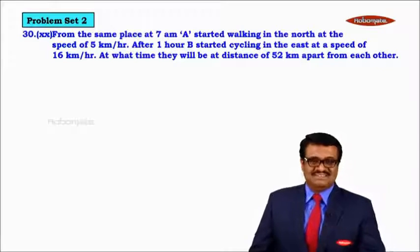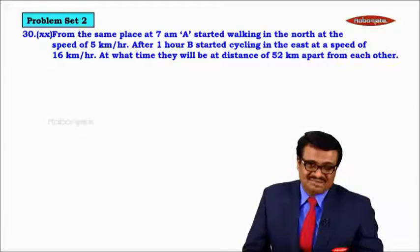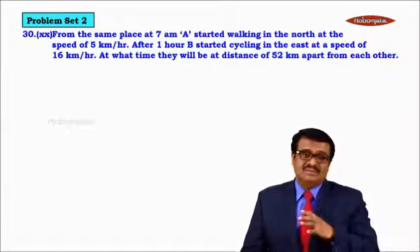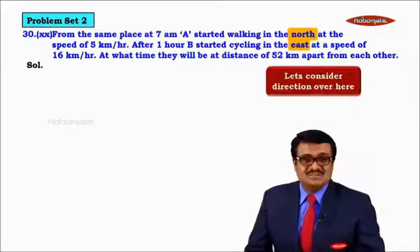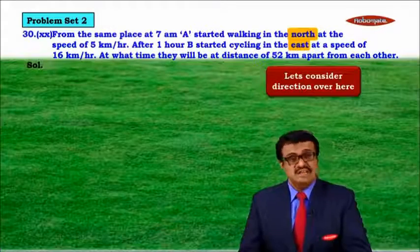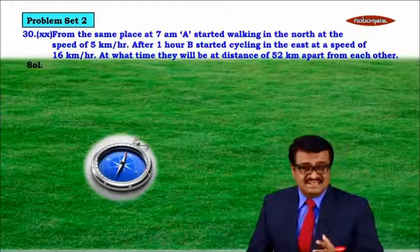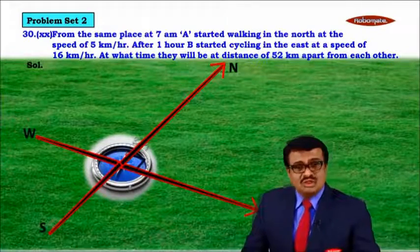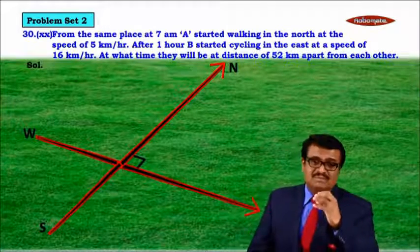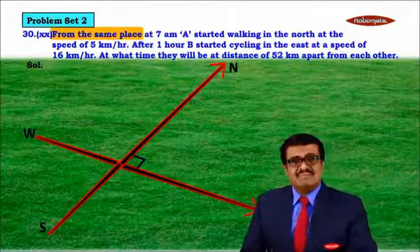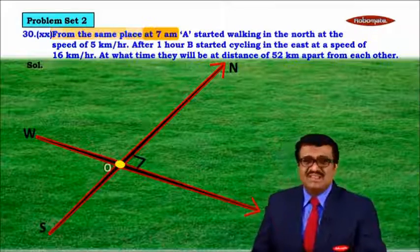Before finding what is to be determined, let us understand the directions mentioned in the problem — north and east. Suppose this is a ground. North and east are two perpendicular directions. Let us read the problem part by part, step by step. From the same place — suppose the place is point O.